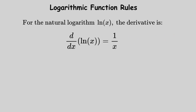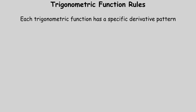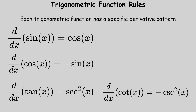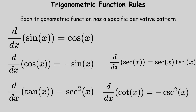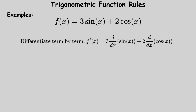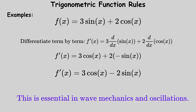Logarithmic function rules: for the natural logarithm, the derivative is 1 over x. Trigonometric function rules: each trigonometric function has a specific derivative pattern. Sine becomes cosine. Cosine becomes negative sine. Tangent becomes secant squared. Cotangent becomes negative cosecant squared. Secant becomes secant multiplied by tangent. And cosecant becomes negative cosecant multiplied by cotangent. For example, if f of x equals 3 sine x plus 2 cosine x, then f prime of x equals 3 cosine x plus 2 times negative sine x, which equals 3 cosine x minus 2 sine x. Remember to use the chain rule for composite trigonometric functions. This is essential in wave mechanics and oscillation.